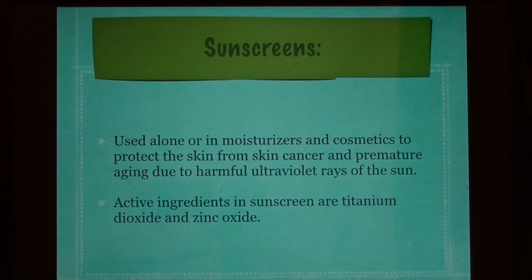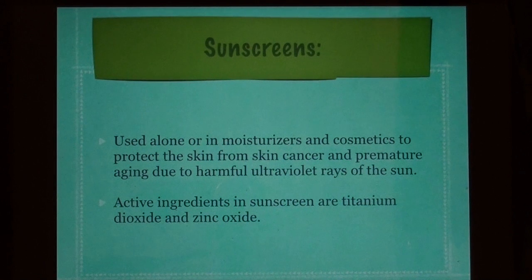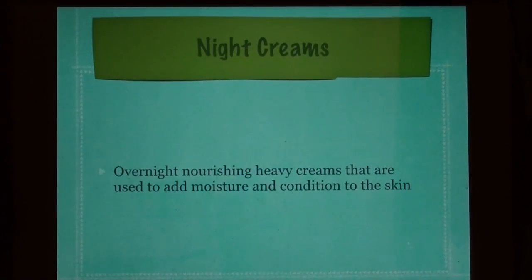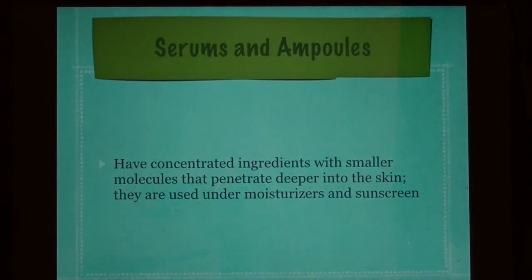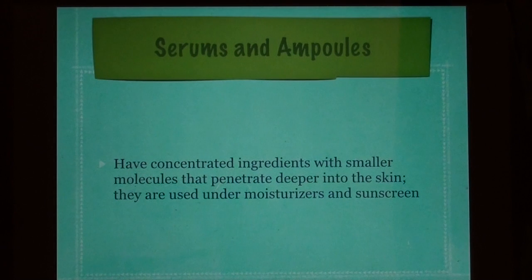Sunscreens are used alone or in moisturizers and cosmetics to protect the skin from skin cancer and premature aging due to harmful ultraviolet rays. Active ingredients in sunscreens are titanium dioxide and/or zinc oxide. Night creams are overnight nourishing heavy creams used to add moisture and condition the skin. Serums and ampoules have concentrated ingredients with smaller molecules that penetrate deeper into the skin; they are used under moisturizers and sunscreen.